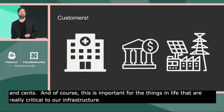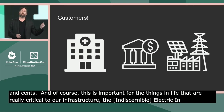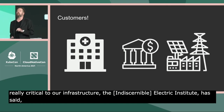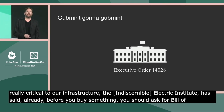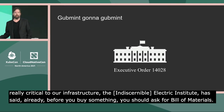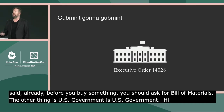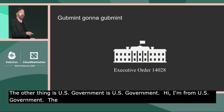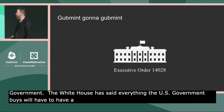The Edison Electric Institute, a trade association of the largest utilities in America, has already said that before you buy something you should ask for a bill of materials — so this is coming. Governments are also going to govern. The White House has publicly said that everything the U.S. government buys is going to have to have a Software Bill of Materials, and the U.S. government buys an awful lot of things.